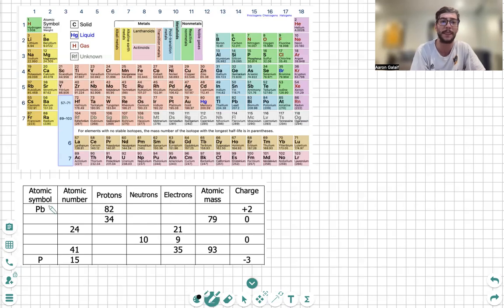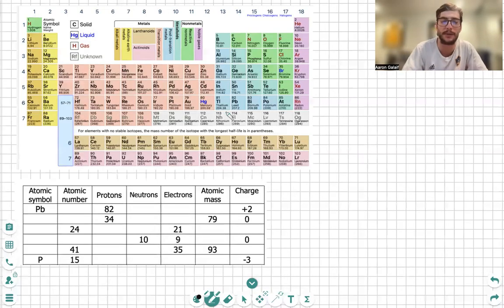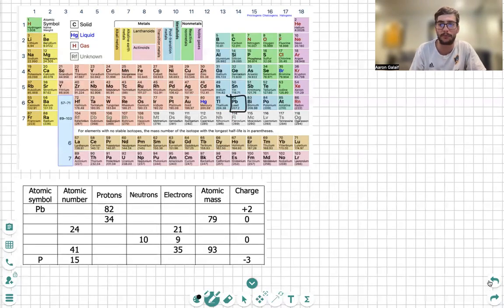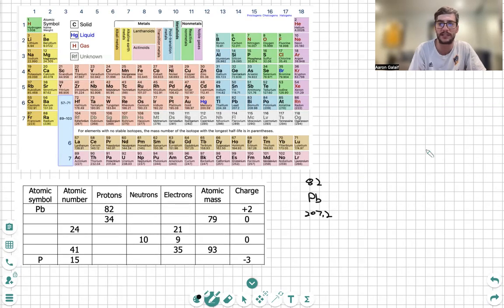First we're going to look for Pb. Pb is another way to call lead. We find Pb on the periodic table right here. We have 82 on the top, Pb, and we have 207.2 on the denominator. This number on top is called the atomic number. The atomic number is equal to the number of protons.